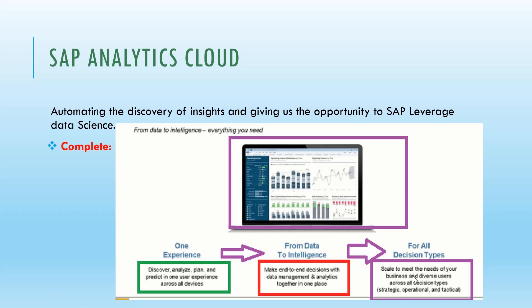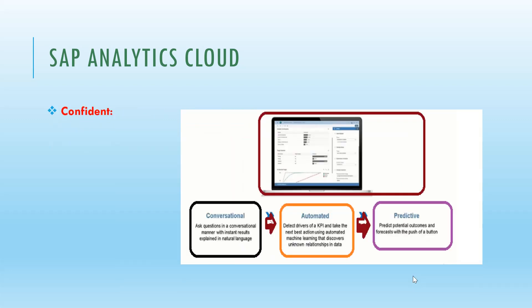SAP Analytics Cloud supports all decision types — strategic, operational, and tactical. It is a conversational tool, meaning users can ask questions in natural English language and get data analysis easily. It is automated, detecting drivers per KPI automatically. It is also predictive — it can predict potential outcomes and forecast with the push of a button, generating next six months or five years predictions with a simple click.